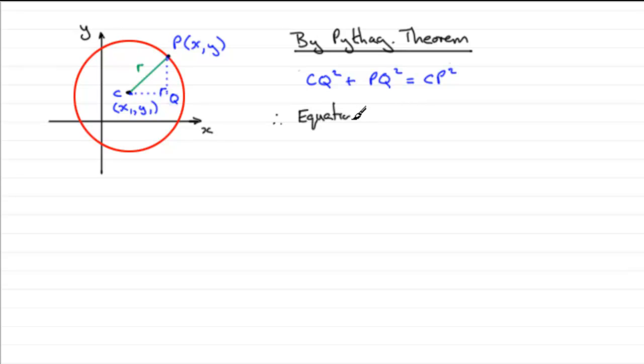So therefore equation of circle is, now what's it going to be? Well, for CQ, this length here is going to be given by the difference in the x-coordinates. We know the x-coordinate of Q, because it's vertically below P, will be x. So this length here is going to be x minus x1. And we're looking at CQ squared, so what we've got is x minus x1, that's CQ, we need to square it. And to this we add the distance PQ all squared.